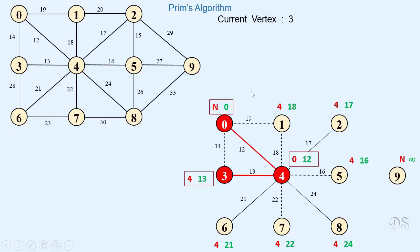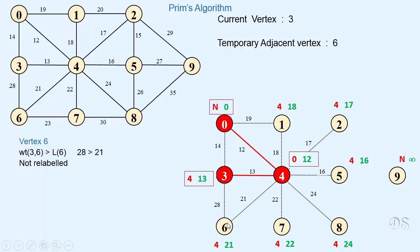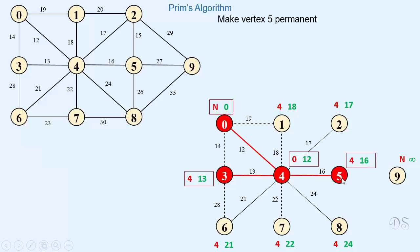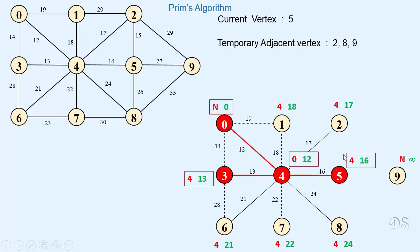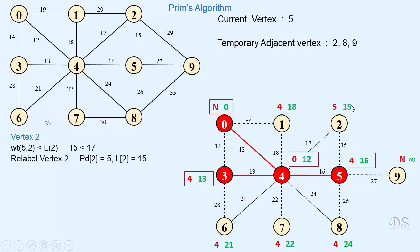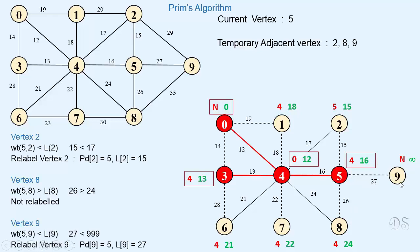Vertex 3 is now the current vertex. We examine vertex 6 which is adjacent to 3 and temporary — 28 is greater than 21, so we do not relabel vertex 6. From all temporary vertices, vertex 5 has the minimum length, so we make it permanent. The predecessor of 5 is 4, so edge (4, 5) is included in the minimum spanning tree. Vertex 5 is now the current vertex. We examine vertices 2, 8, and 9 adjacent to vertex 5. Vertex 2: 15 is less than 17, so we relabel it. Vertex 8: 26 is greater than 24, so we do not relabel it. Vertex 9: 27 is less than infinity, so we relabel it.